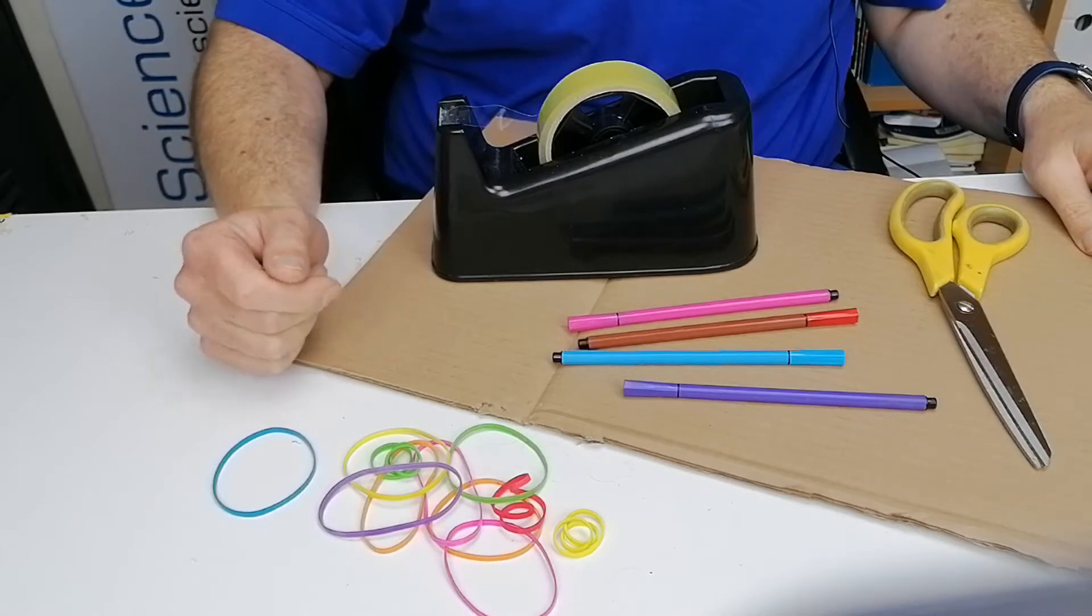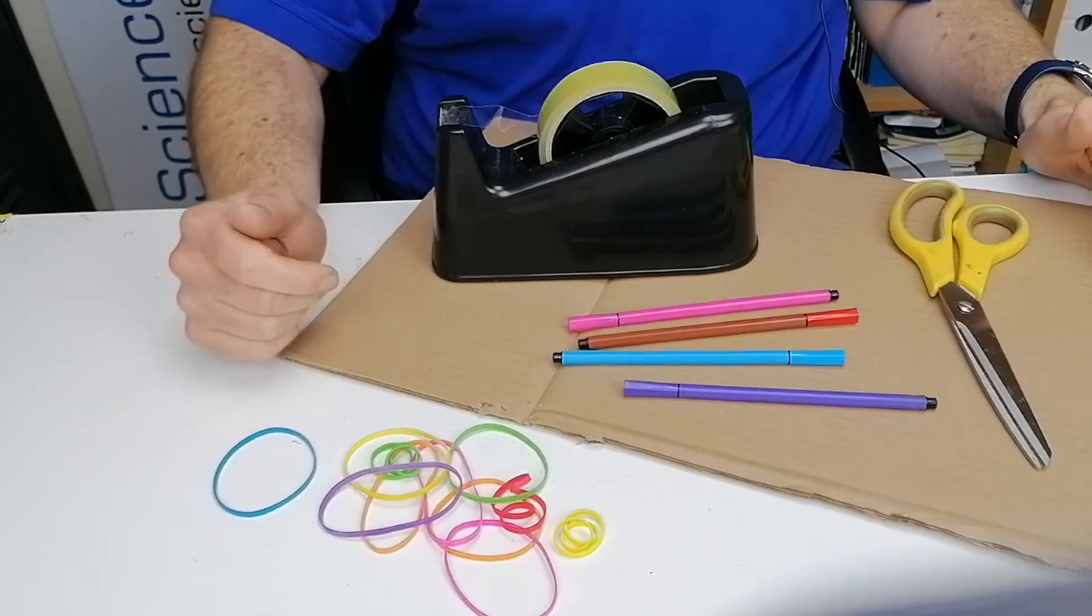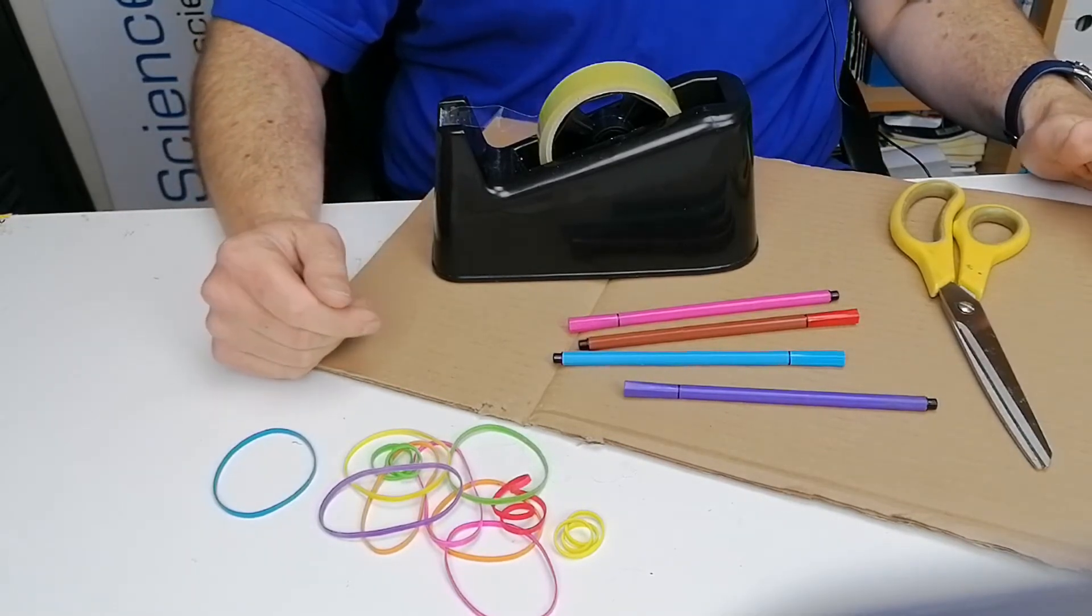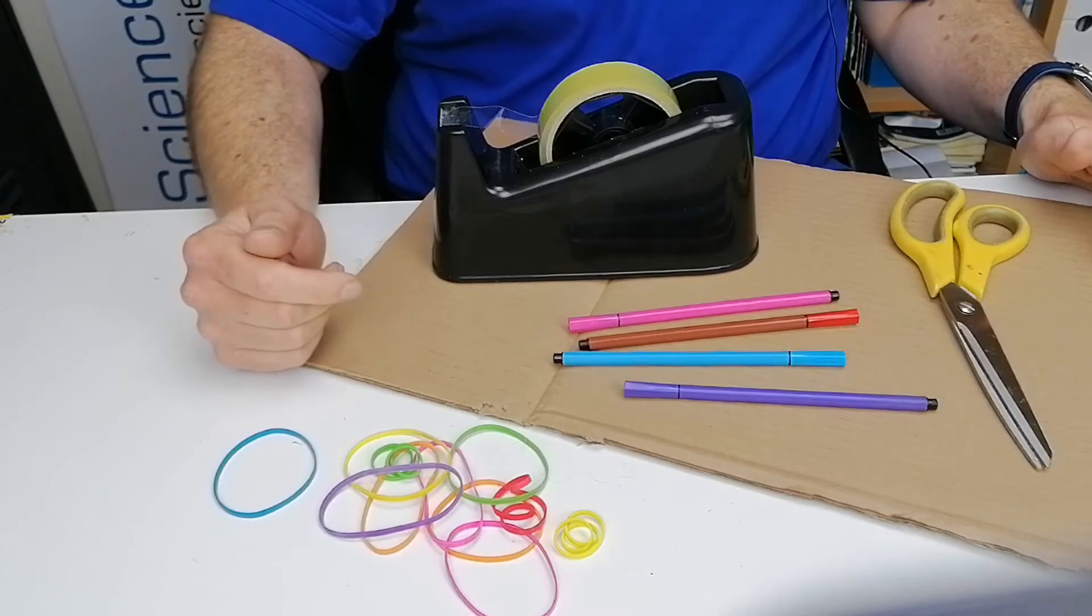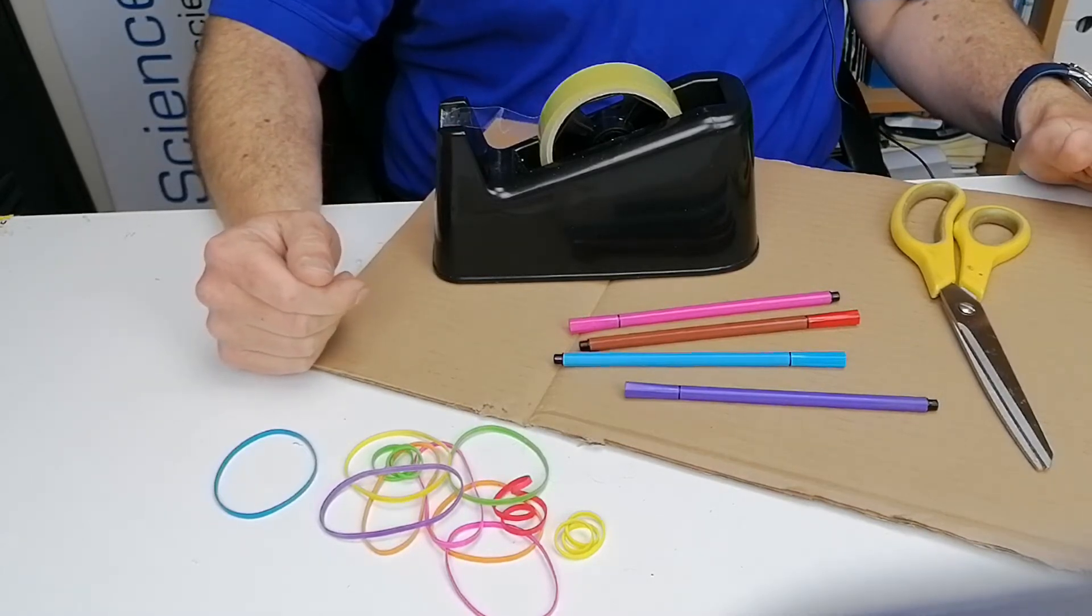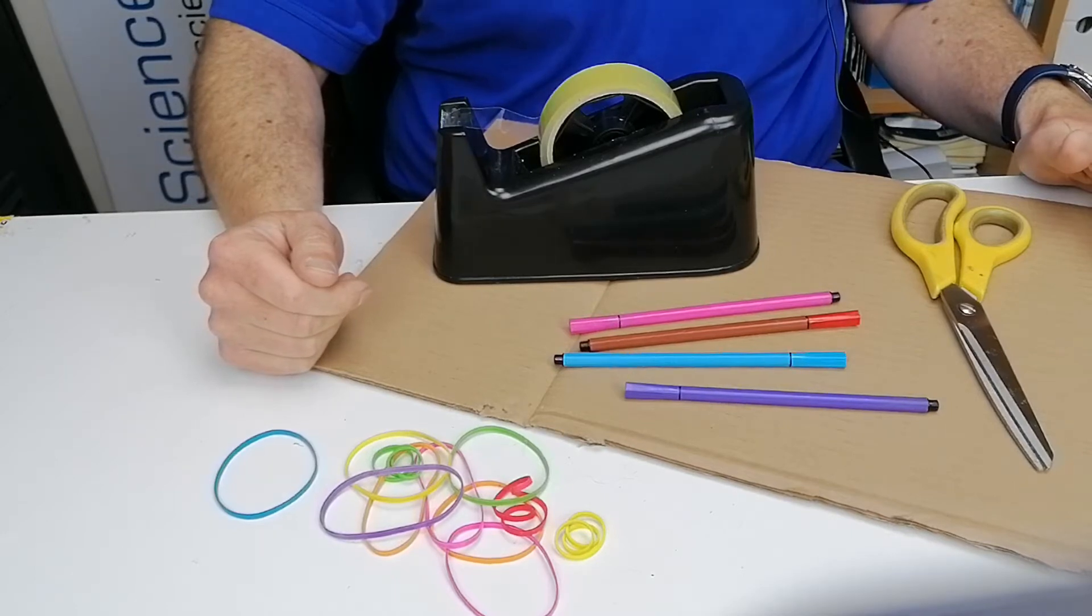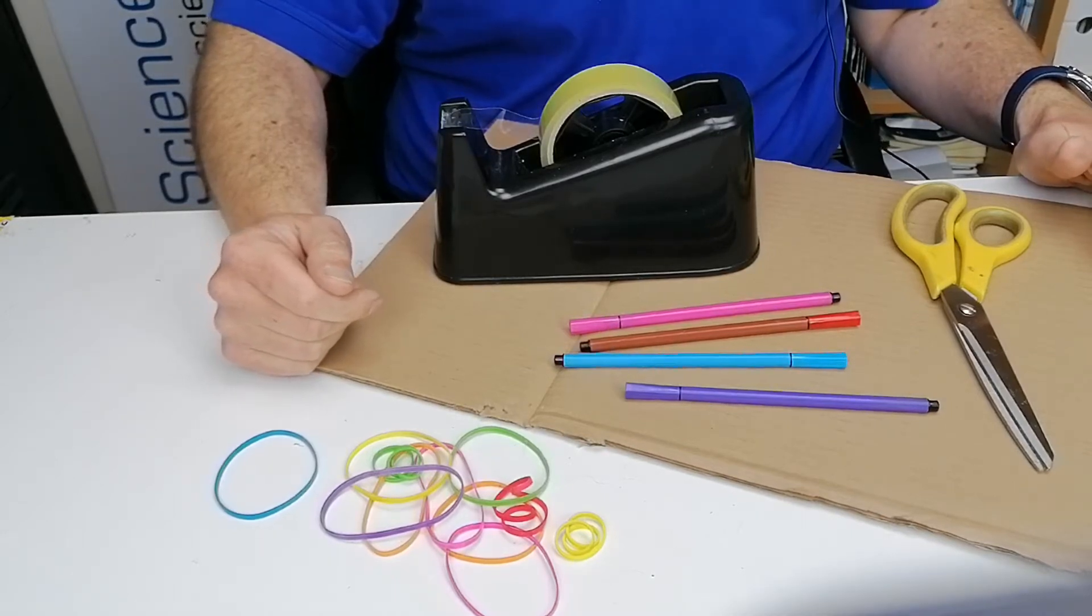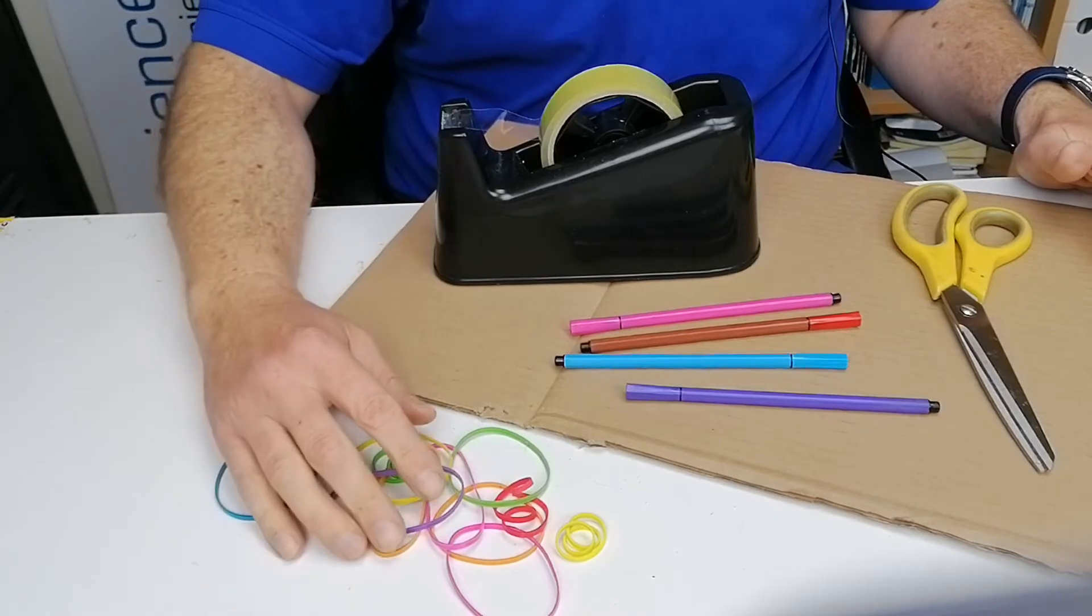In this activity we're going to make a harp made out of some cardboard and elastic bands. It's very similar to the guitar we made out of a milk carton. If you want to try that one, I have a link to the video in the description.